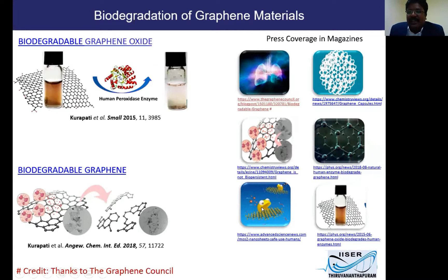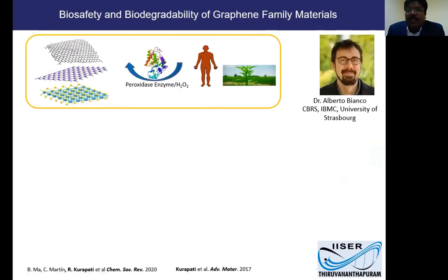Research magazines covered some of our work, especially on the degradation of 2D materials including molybdenum disulfide and hexagonal boron nitride. I'd like to thank the Graphene Council, who covered one of my works in their news article. Most of the work I'm showing was done in the laboratory of Professor Alberto Bianco at CNRS, University of Strasbourg.